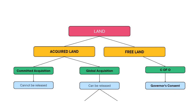What if someone buys a land that is acquired by the government? The first information you need to find out is if this land is committed or global. Committed acquisition means that the government has handpicked these lands and reserved them for infrastructure development — for example, to build schools, hospitals, police stations, fire stations, roads, and so on. Anybody that happens to buy such a land has lost his or her money, because that land can never be released.